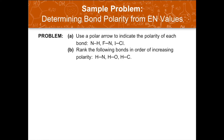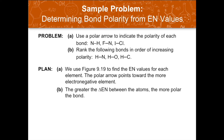Here we have some sample problems. The first is to use a polar arrow to indicate the polarity of each bond: nitrogen and hydrogen, fluorine and nitrogen, and iodine and chlorine. We also need to rank the following bonds in order of increasing polarity: hydrogen–nitrogen, hydrogen–oxygen, and hydrogen–carbon. To solve this, we use the electronegativity values and use a polar arrow to indicate the more electronegative element. The greater the electronegativity difference, the more polar the bond.